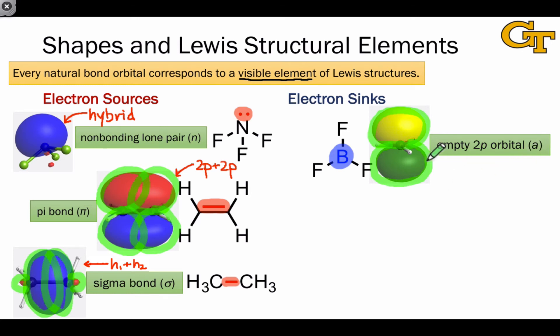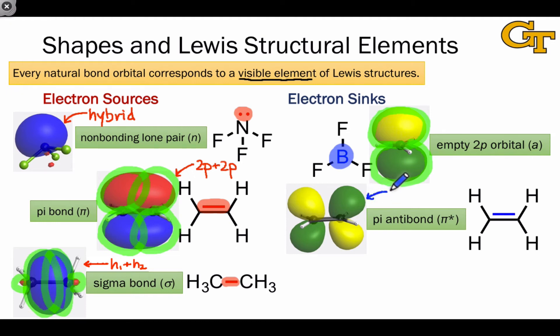For each bonding combination, we also have an anti-bonding combination that represents an empty natural bond orbital. For example, if we combine the 2p orbitals in a subtractive way, such that the signs of the adjacent p orbitals are opposite, we end up with the pi-antibond. And we should associate double and triple bonds within Lewis structures with both pi-bonds and pi-antibonds, since the pi-bond can either donate or accept electrons.